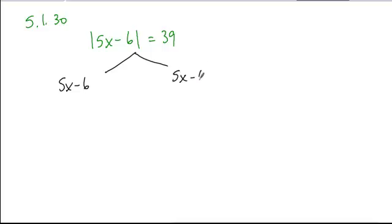Each equation is going to begin with the expression that's inside the absolute value, set equal to what was given, 39, and the opposite of what was given, negative 39, and then solve each equation independently.